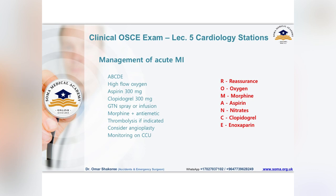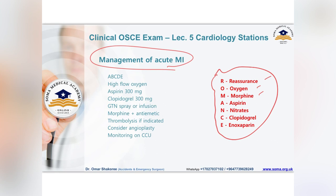Management of acute myocardial infarction — the mnemonic is ROMANCE: Reassurance, Oxygen, Morphine, Aspirin, Nitrate, Clopidogrel, and Enoxaparin or Heparin.